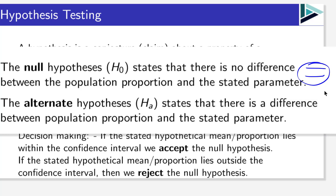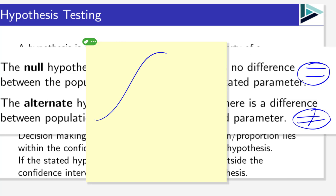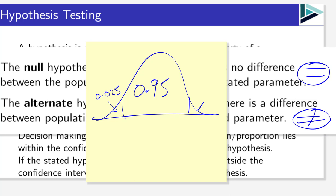The null hypothesis will always contain the equals sign. The alternate hypothesis states that there is a difference between a population proportion and the stated parameter, so the alternate hypothesis will always contain the not-equals sign. At Leaving Cert level we are only dealing with two-tailed hypothesis tests, so we have our 95% — that's 0.95 — and then 0.025 in each tail.